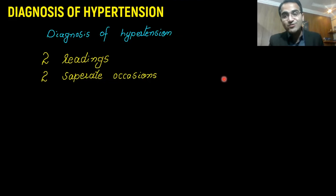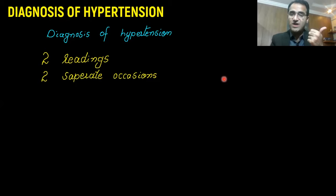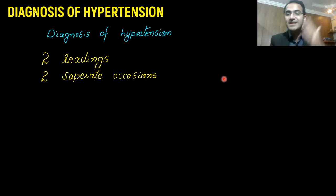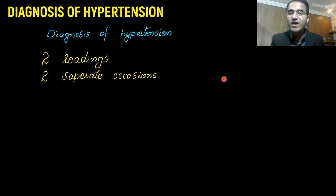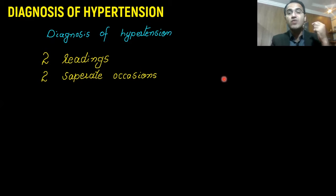For the diagnosis of hypertension, you need at least two readings on two separate occasions, because a single reading cannot be used for diagnosis. Sometimes when a patient is in a hospital setting or clinic, they get anxious and stressed, and their blood pressure elevates due to that anxiety — this is called white coat hypertension. To avoid it, two readings are taken on two separate occasions.